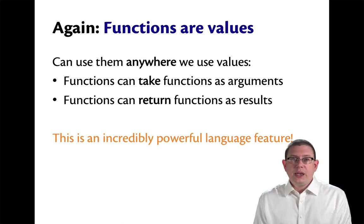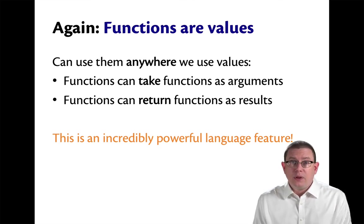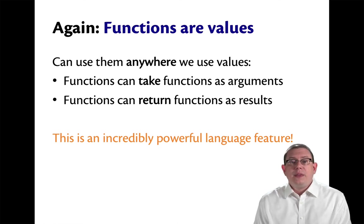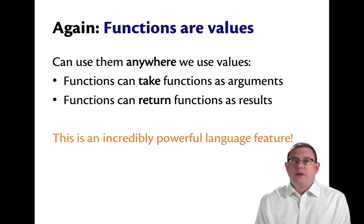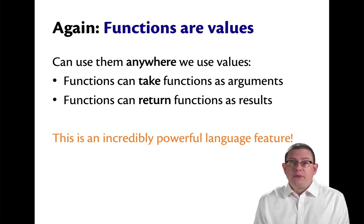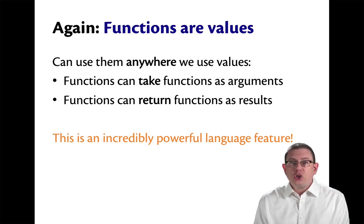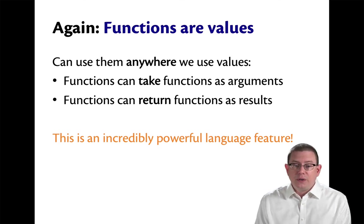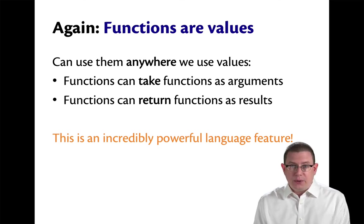This is really just a consequence of our design decision that functions are values — we can use them anywhere we use values. Functions can take other functions as arguments and they can return other functions as results. We're making use of that — returning a function as a result — in partial application. We partially apply the function and get a result back, which is just another function. This is an incredibly powerful language feature and one of the hallmarks of functional programming.